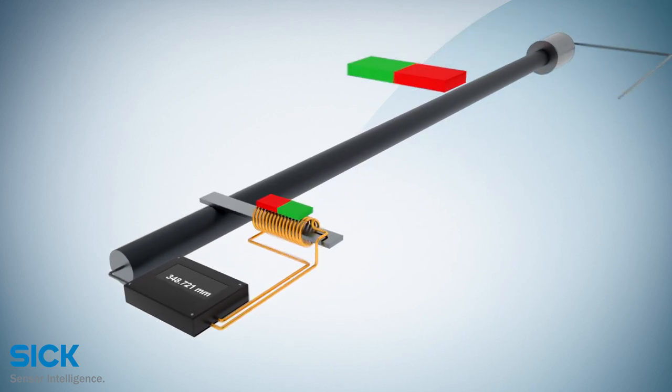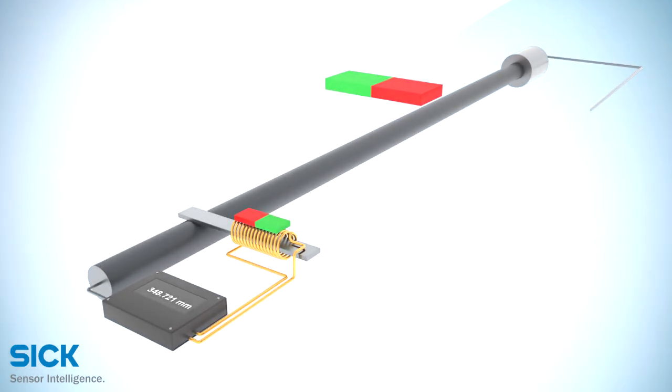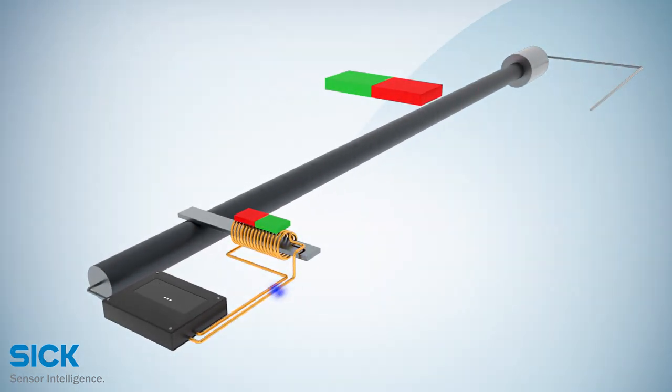As the speed of the ultrasonic wave is known, the time between applying the current pulse and getting back the electrical signal is measured and converted into a linear position measurement.